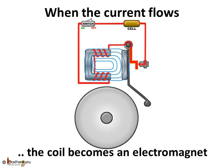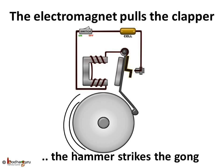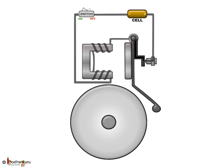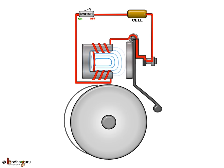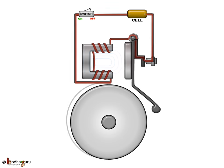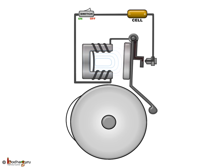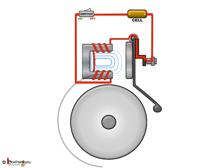The current flows in the coil and the hammer strikes the gong again. This process is repeated again and again very quickly. Thus, the hammer strikes the gong every time the circuit is completed. This is how the bell rings.